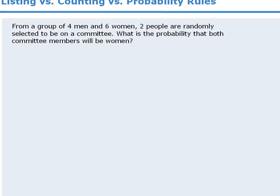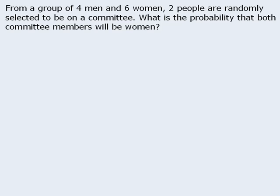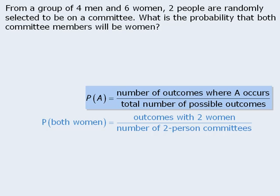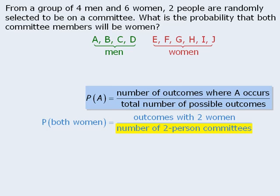Now let's examine a different question. Here we are randomly selecting two people for a committee, and we want to find the probability that both selected people will be women. One option is to apply the basic probability formula, which we can use because when selecting two people the possible outcomes are equally likely. Let the letters A to J represent the ten people, where A to D represent the four men and E to J represent the six women. Since the order of the two selected people does not matter, this is a combination question. We can select two people from ten in 10-choose-2 ways.